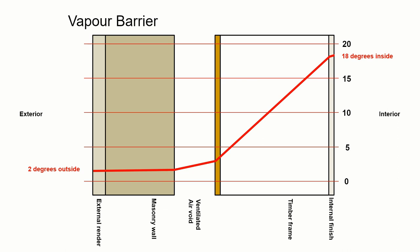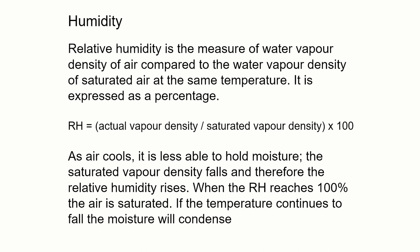From there, there's a little bit of heat loss across the ventilated void, and then the masonry wall is more or less constant at the temperature of the outside. We can see that if we mapped the temperature from 18 degrees inside to 2 degrees outside, the majority of that fall happens within the timber frame.